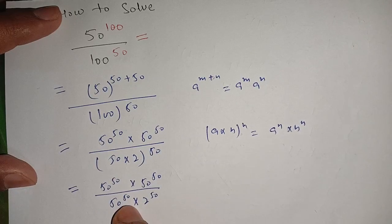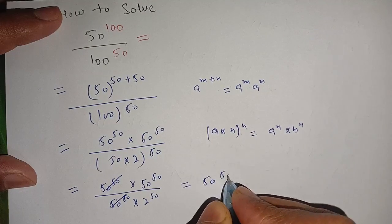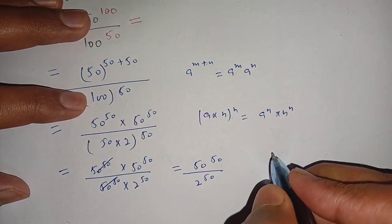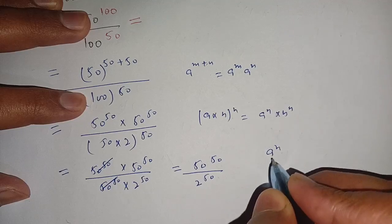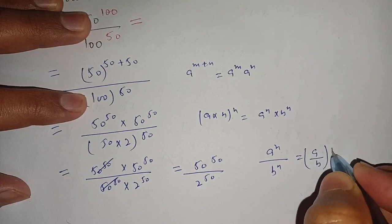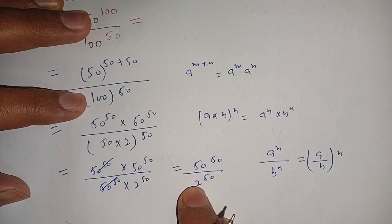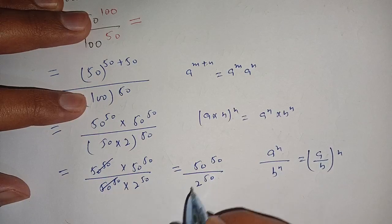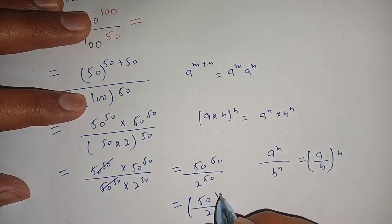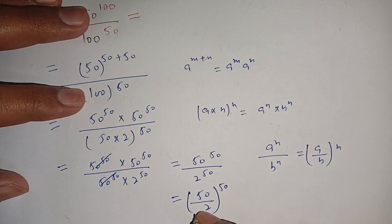We can cancel out 50 power 50 by 50 power 50, so we get 50 power 50 divided by 2 power 50. We know the identity: a power n upon b power n is equal to (a divided by b) power n. Here a is 50, b is 2, and n is 50. So we write it as (50 divided by 2) power 50.